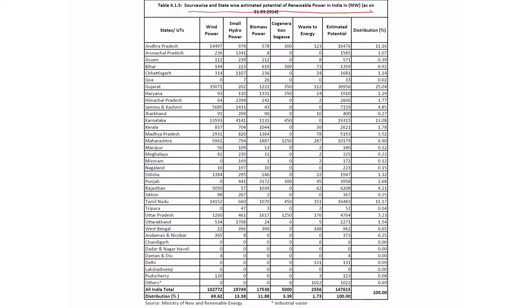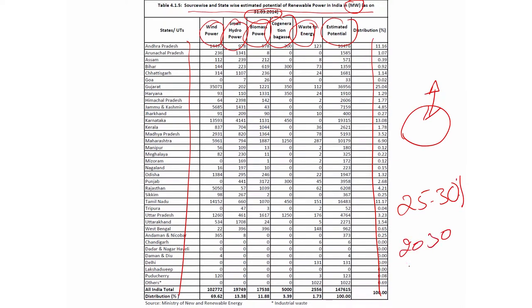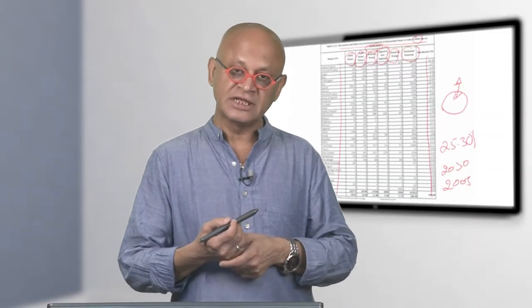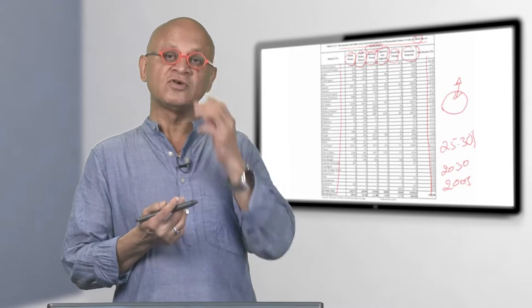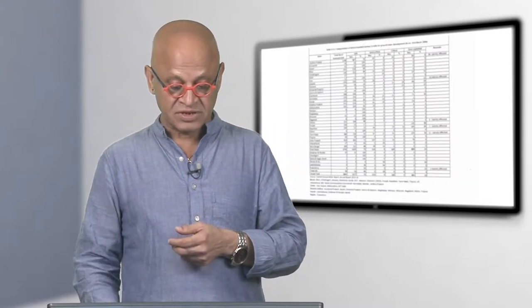Source wise and state wise estimated potential for renewable energy in India in terms of megawatts - looking at wind power, small hydro power, biomass power, co-generation of gas waste to energy. To meet its goals of reducing the carbon intensity of the GDP by 25 to 30 percent by 2030 with respect to 2005, India has to essentially ramp up its renewable portfolio rather quickly.